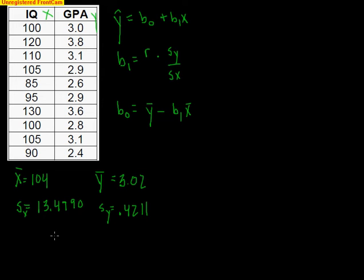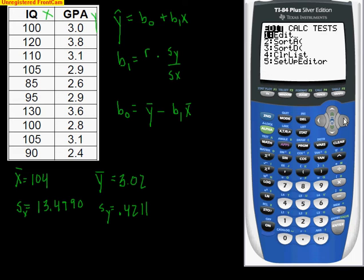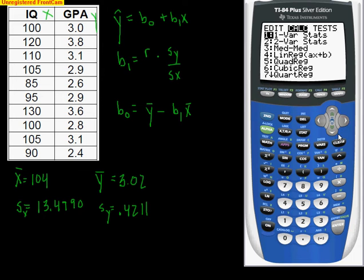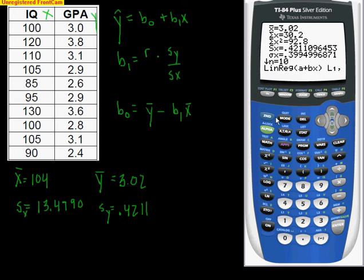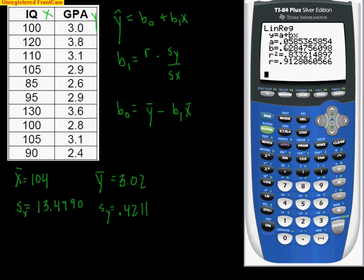The last thing we need is the R value. To calculate the R value, we're actually going to let the calculator do all the work for us. We're going to go stat calc, we're looking for a linear regression. Do not choose number four, that's AX plus B. We do A plus BX. That's the order we like, Y intercept plus B times X. Hit on that, tell it to do list one first, that's the X list, comma, list two, that's the Y list. It's going to calculate everything for us. A is your Y intercept, B is your slope. There's your R squared and your R values. The R value is 0.9128, the R squared value is 0.8332.